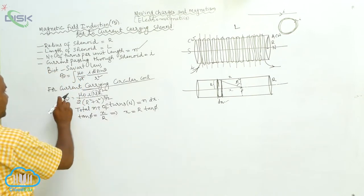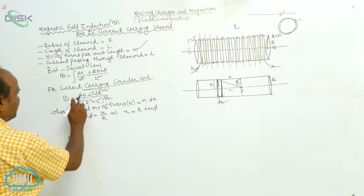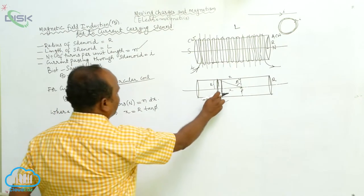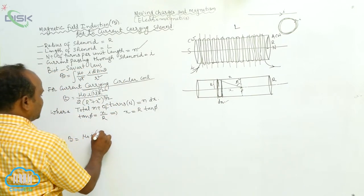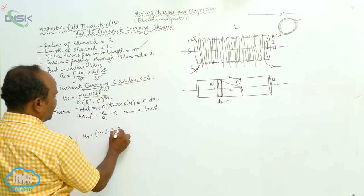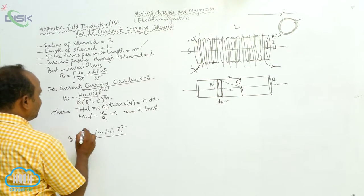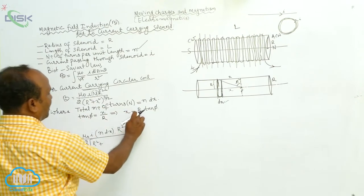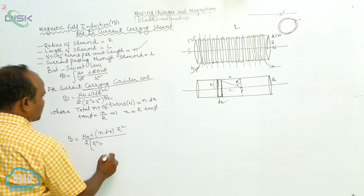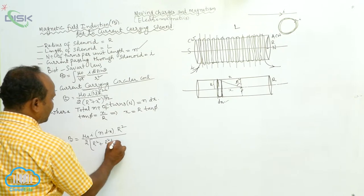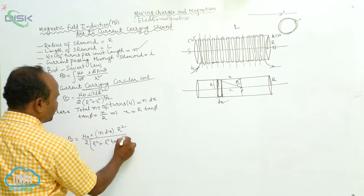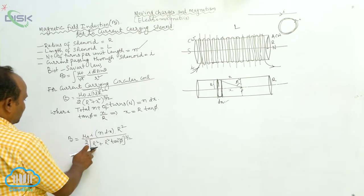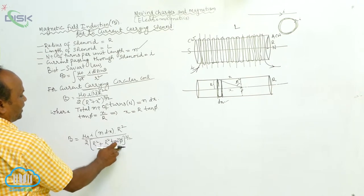Here, calculate B. B is equal to μ₀·i·n, where n is the total number of turns in the circular coil, that is n·dx. So B = μ₀·i·n·dx·r² by 2 into r² plus x² whole to the power of 3 by 2. Now x² equals r²·tan²φ, whole to the power of 3 by 2.